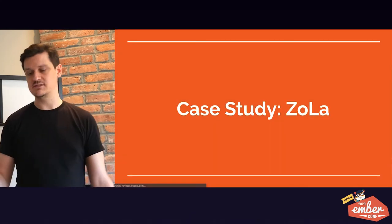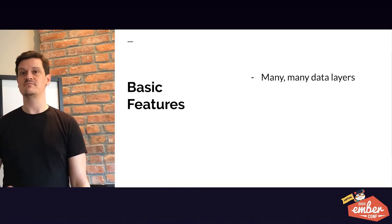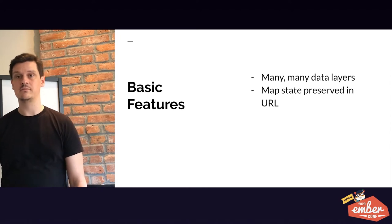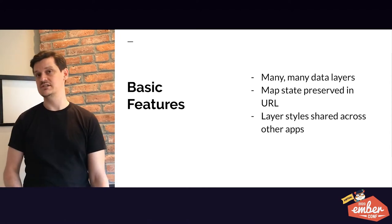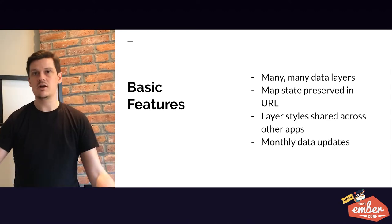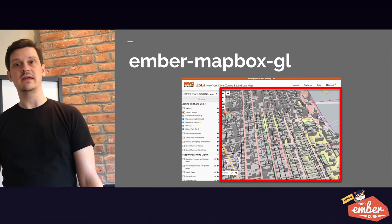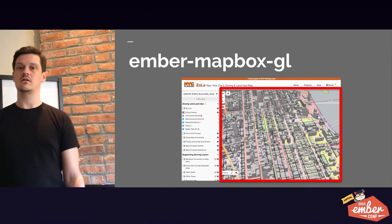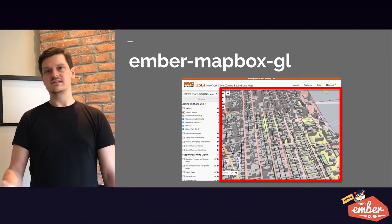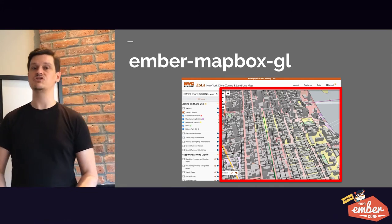Case study: Zola — back to Zola, not the wedding app. Basic features: many, many data layers, map state preserved in URL, layer styles shared across other apps, monthly data updates. The easiest way to jump in for us was to use Ember — now called Ember Mapbox GL. It's simply a bindings layer on top of the core Mapbox GL.js library. It provides a really nice declarative developer experience.